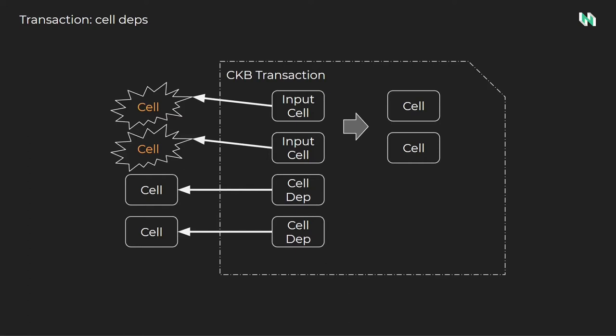Cell DEPs included in a transaction are not consumed, so they remain live cells and can be reused in another transaction. The input cells are consumed and marked as dead cells. The two cell DEPs are not consumed and remain unchanged. The output cells are the new state being created in place of the consumed input cells. After this transaction executes successfully, there will be four live cells: the two input cells are destroyed, two output cells are created, and the two cells referenced as cell DEPs remain unchanged and are still live cells.